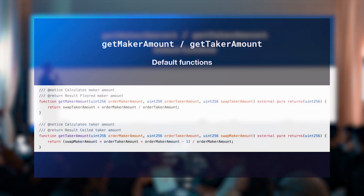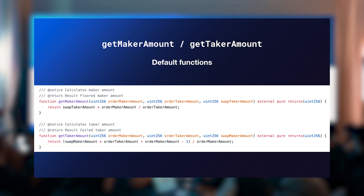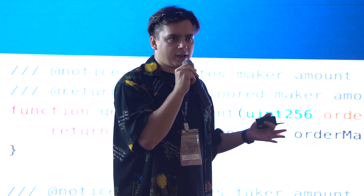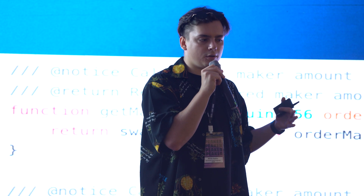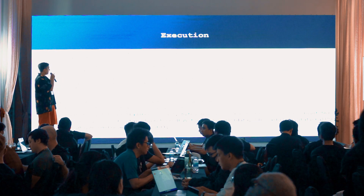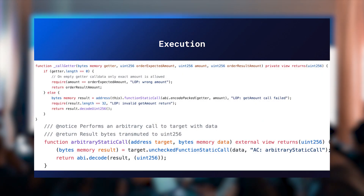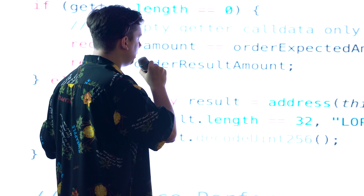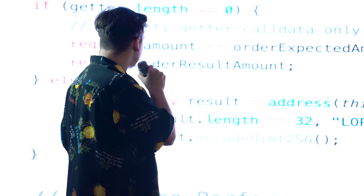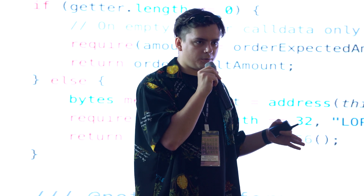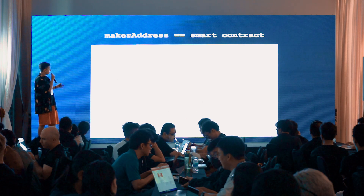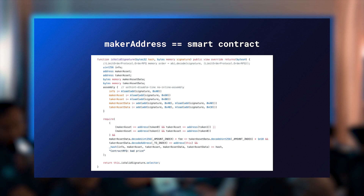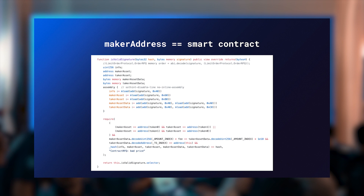A bit more about get taker amount and get maker amount: these are default functions that show how we calculate the rate for each fill amount. But you can re-implement them — that means you can have your own price formula for each moment when your limit order is being filled. Regarding execution: each time we execute a limit order, we use specific code. If you use a smart contract as the maker, you need to implement an additional callback to verify the signature from your smart contract side — this is how we validate the signature on the smart contract level.